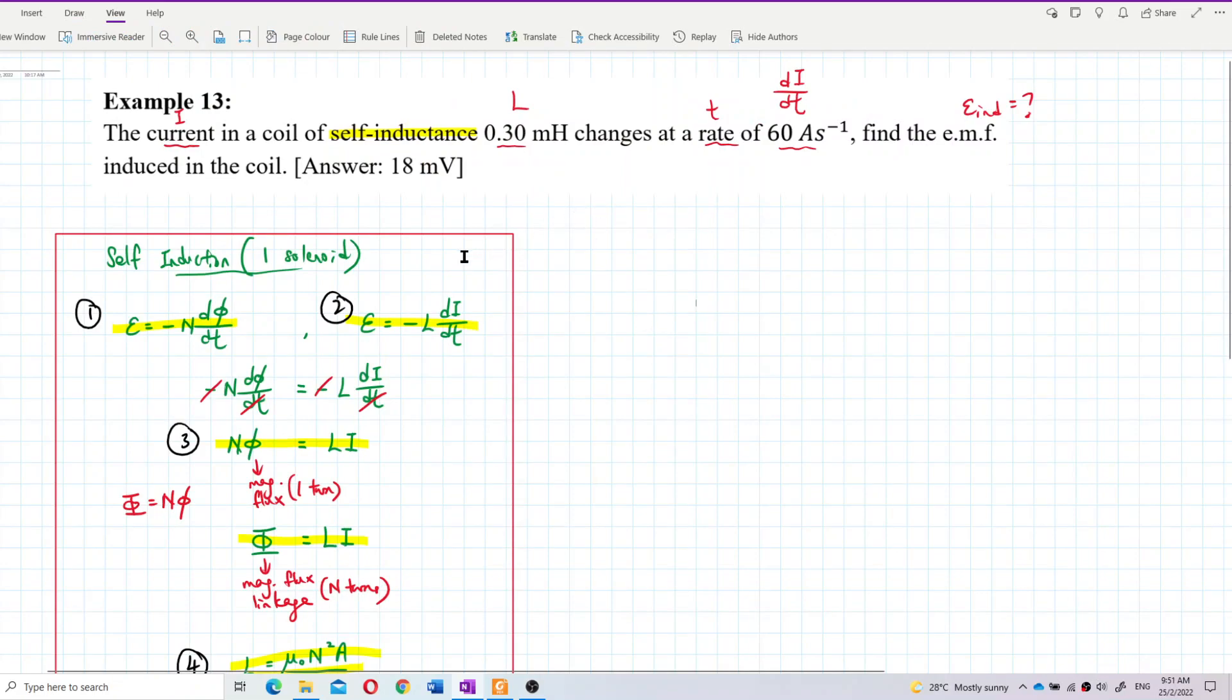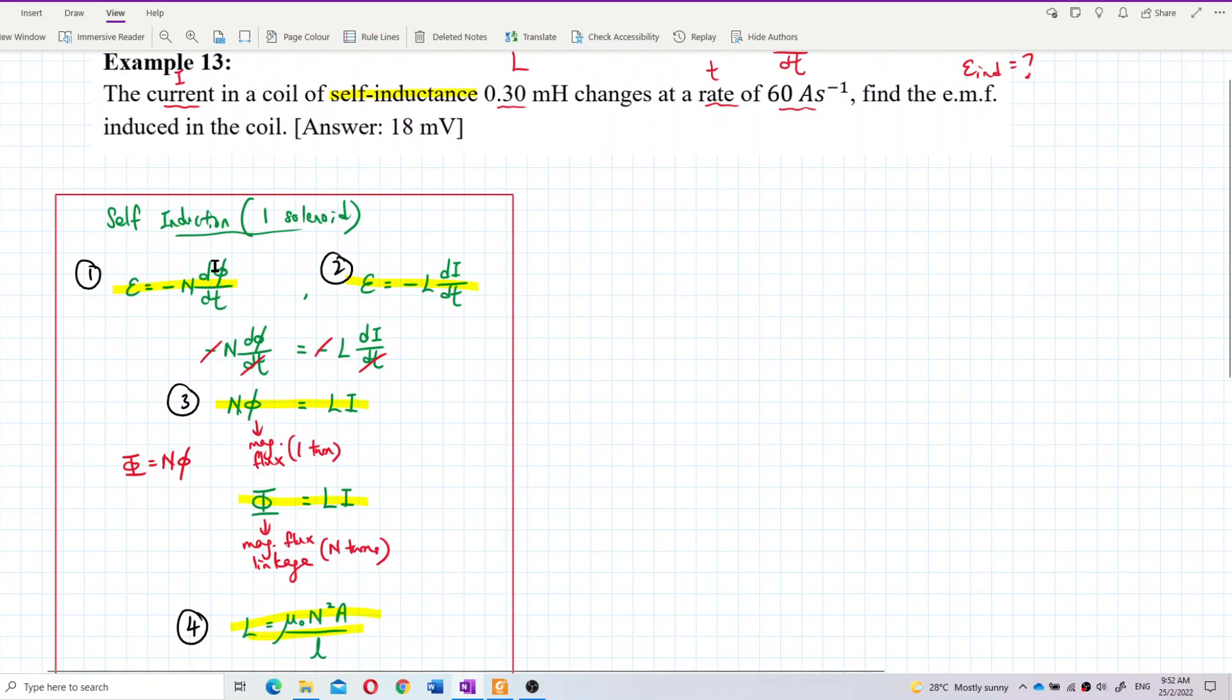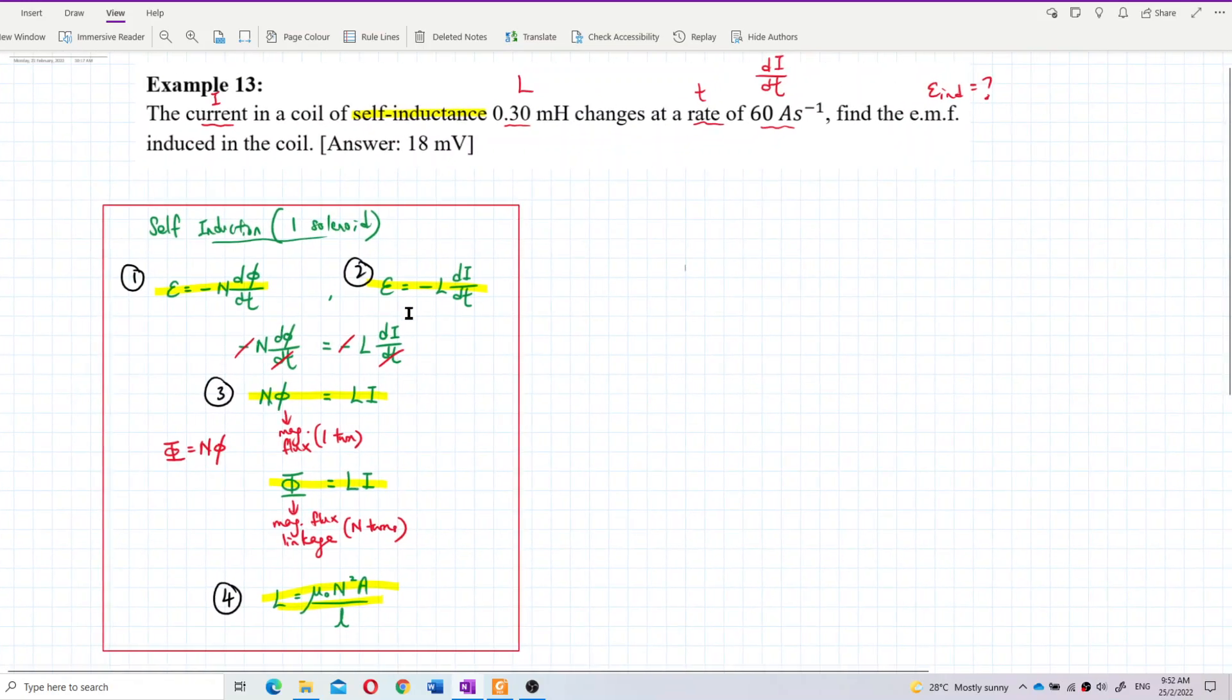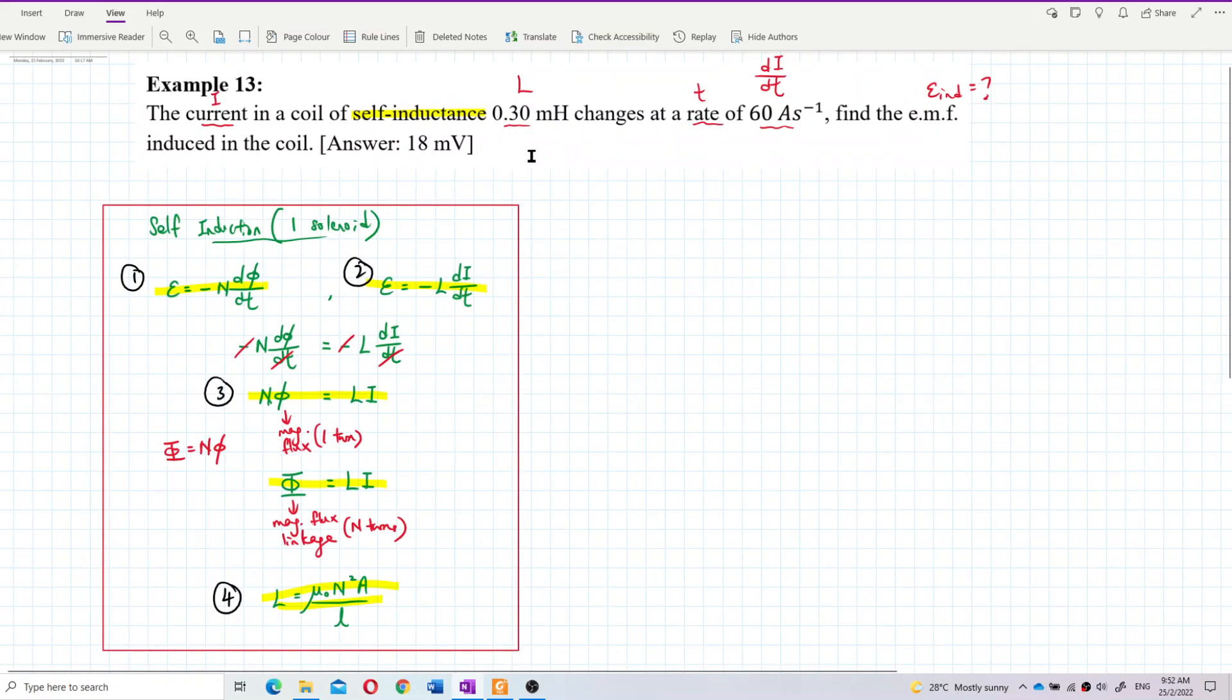These are the formulas you can remember: E = -Ndφ/dt, E = -L(di/dt), Nφ = LI, and L = μ₀N²A/l. What equation is most suitable? We have L and di/dt, we want to find induced EMF, so we use the second one: E = -L(di/dt).